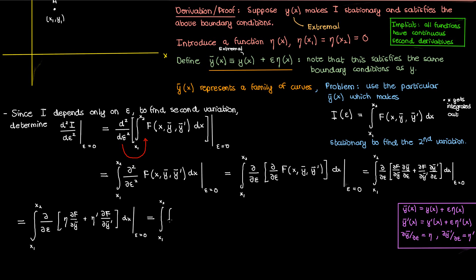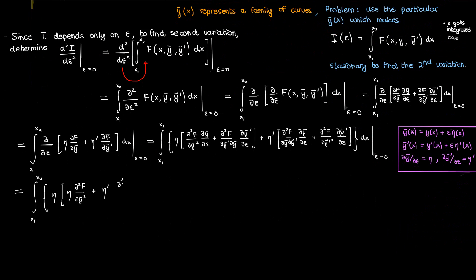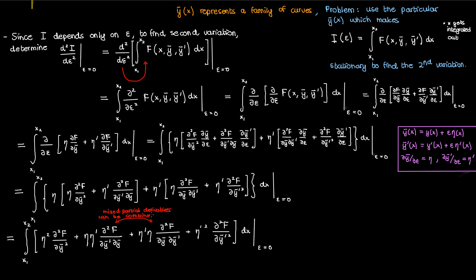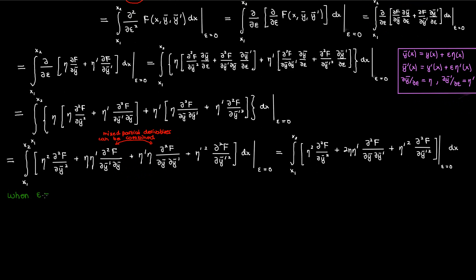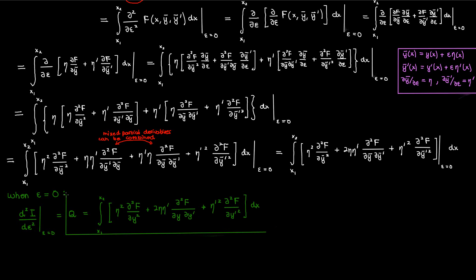Let's now take the second partial with respect to ε of the expression inside the brackets. The functions ∂F/∂y-bar and ∂F/∂y-bar-prime are still functions of x, y-bar, and y-bar-prime technically. So when we apply the chain rule to find the second variation, we get the expanded expressions for ∂F/∂y-bar and ∂F/∂y-bar-prime. Plugging in the relevant partial derivatives for y-bar and y-bar-prime and multiplying everything out, we then combine the common terms. Applying the condition that ε = 0 means y-bar and y-bar-prime just become y and y'. This integral, which I'll call Q from now on, represents our second variation.